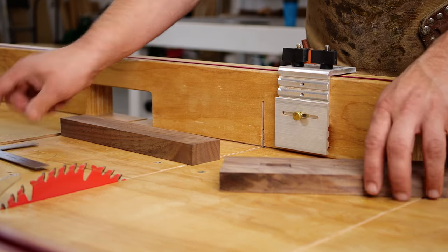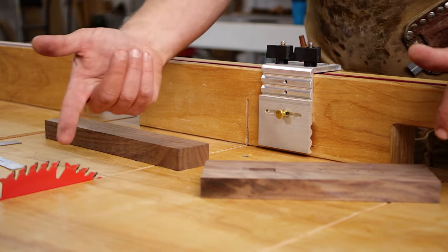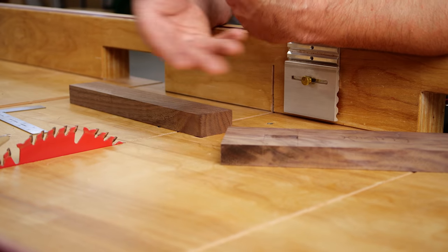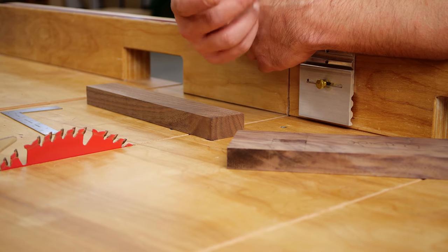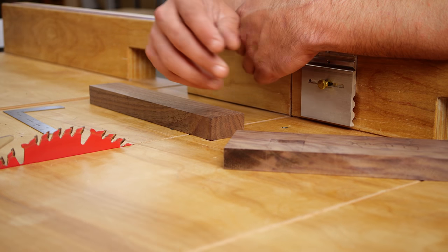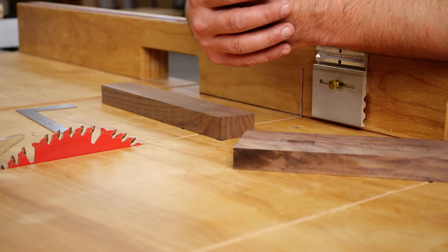You want it to be pretty darn snug because whether you use a dado stack or a regular 10 inch blade, you're going to have some marks on there that you're going to want to clean up with some hand planes. You're going to take off another very very very teeny amount, so if it's really snug now, when you clean up the tenon it's going to fit perfectly.